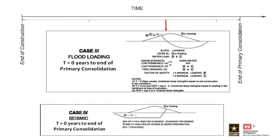The last case we look at is a seismic loading condition. I'll reference ER 1806 for how we evaluate slope stability for seismic cases, which I'll talk more about later in the week. It's really an evolving analysis — how we look at embankments under seismic loads.